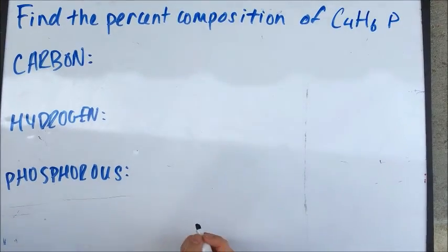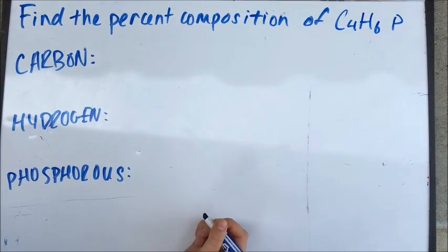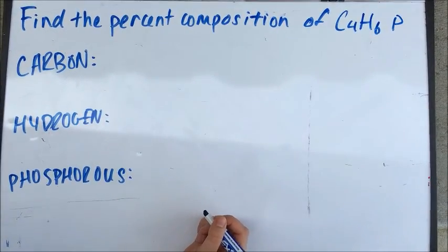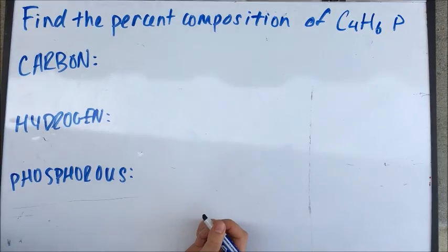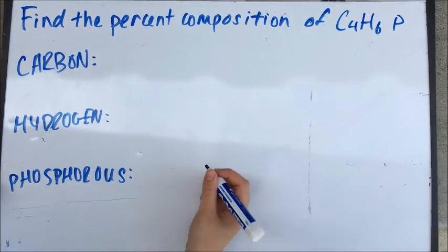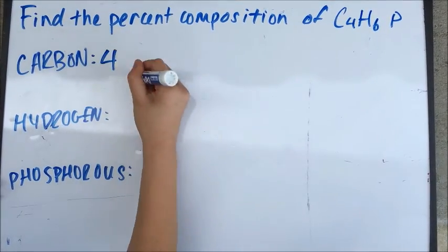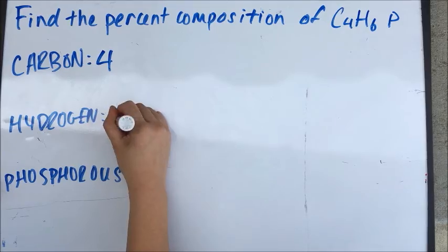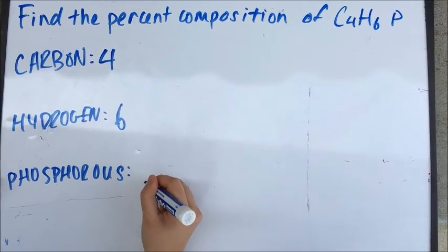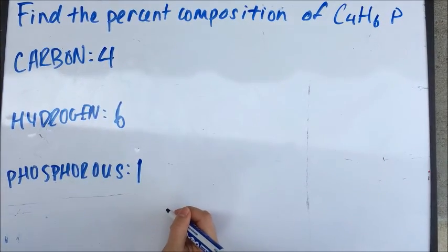Find the percent composition of C4H6P. First, find how many moles of each element there are. There are four moles of carbon, six of hydrogen, and one of phosphorus.